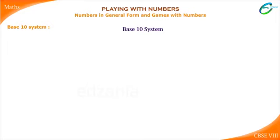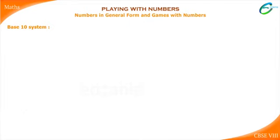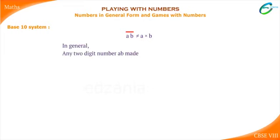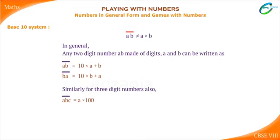This is called the base ten system. The base ten system was contributed by Indian mathematicians: Aryabhatta, Bhaskaracharya, and Brahmagupta. Here AB does not mean A times B — AB means it is a two-digit number. In general, any two-digit number AB̄ made of digits A and B can be written as 10A + B, and B̄A = 10B + A. Similarly for three-digit numbers: ĀBC = 100A + 10B + C, and C̄BA = 100C + 10B + A.